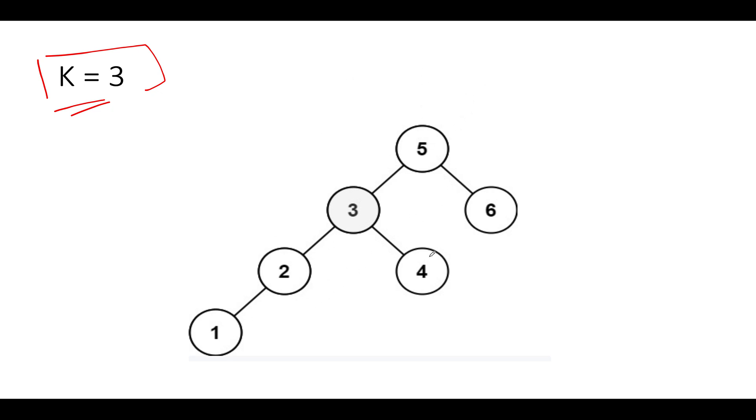Let's perform the inorder traversal of binary search tree. What do you get? You'll get one, two, three, four, five, six. So we get the elements as one, two, three, four, five and six.